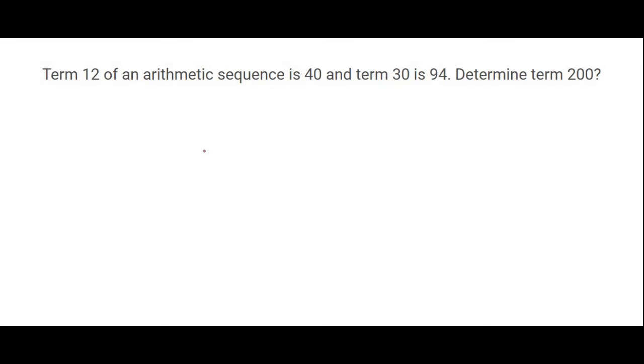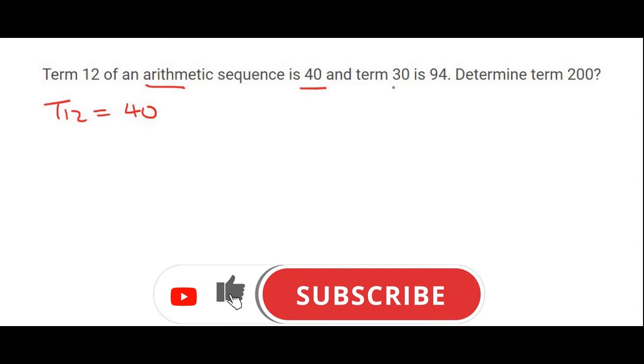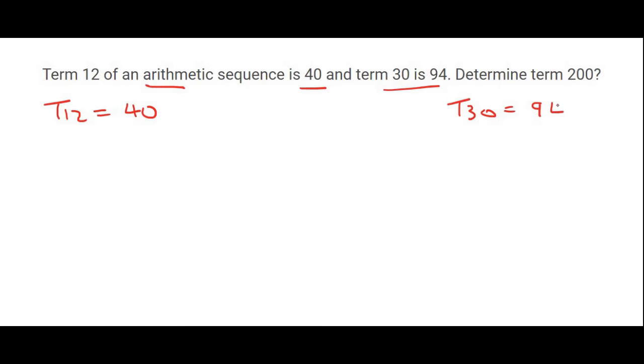If you get a question like this, you should simply plug it into the correct formula. They tell us that term 12 of an arithmetic sequence is 40. So straight away I can say term 12 is 40, and then they say term 30 is 94, so I can say t30 is 94.